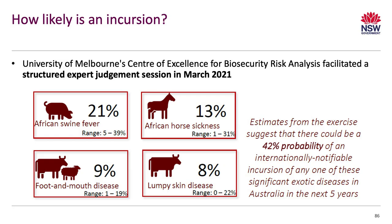The top five priority EADs are foot and mouth disease, lumpy skin disease, African swine fever, African horse sickness, and highly pathogenic avian influenza. Back in March 2021, the University of Melbourne did a risk analysis and found that there was a 42% probability of an incursion of one of these diseases — African swine fever, African horse sickness, foot and mouth disease, or lumpy skin disease — into Australia within the next five years.